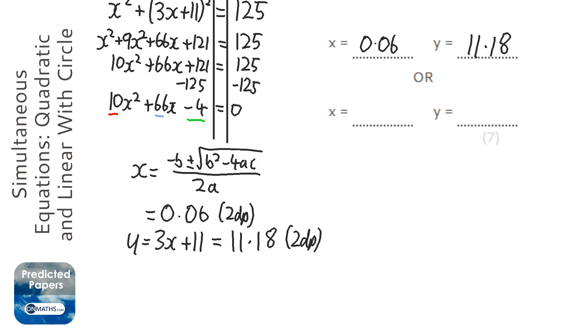So minus 66. And this time take away square root button. 66 squared minus 4 times 10 times minus 4 over 2 times 10. I could just write 20, but anyway.